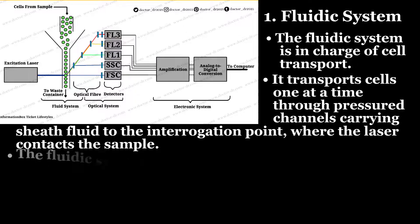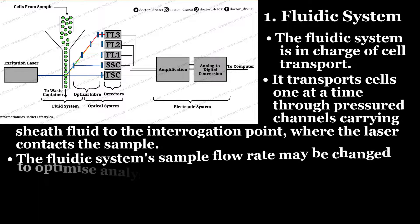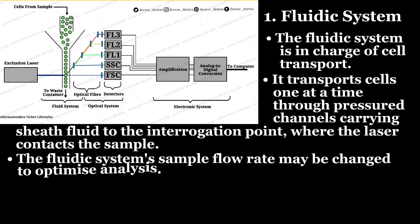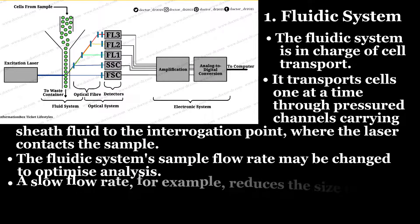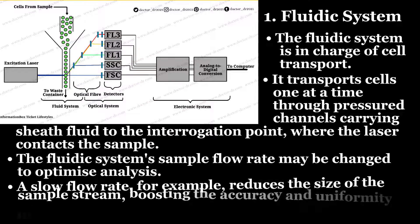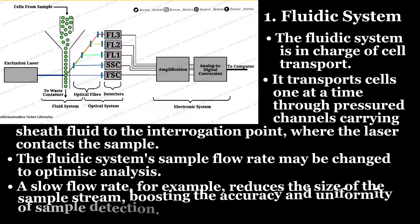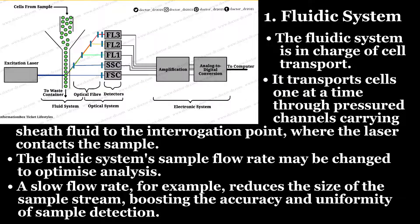The fluidic system's sample flow rate may be changed to optimize analysis. A slow flow rate, for example, reduces the size of the sample stream, boosting the accuracy and uniformity of the sample detection.